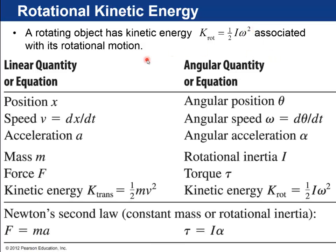If you look at this big table, this is table 10.1 from your textbook, this lists a whole lot of linear equations from previously in the textbook, and now this new angular quantity or equation. So we had these before. Theta is angular position, omega is the angular velocity or angular speed. Angular acceleration is alpha. Rotational inertia, I.